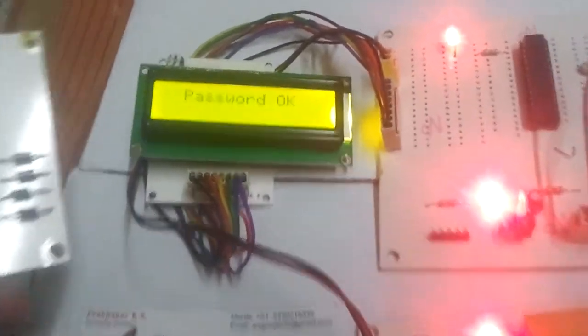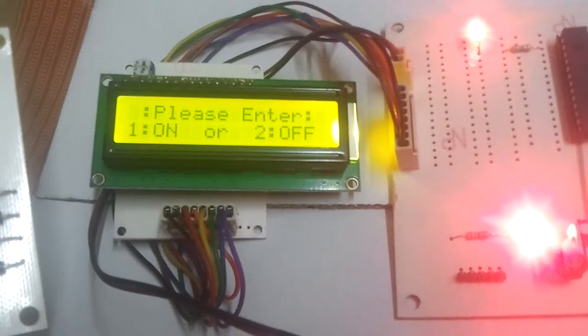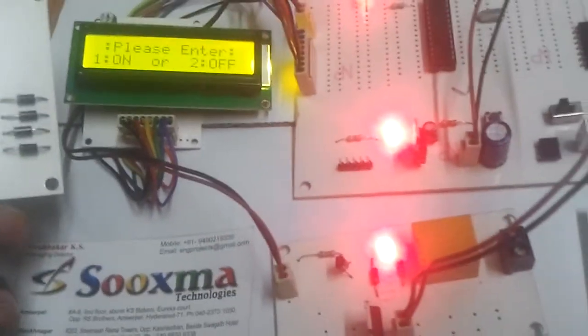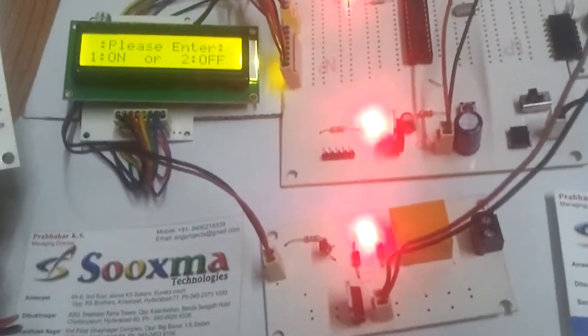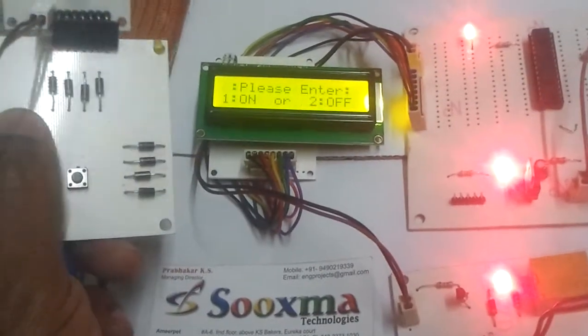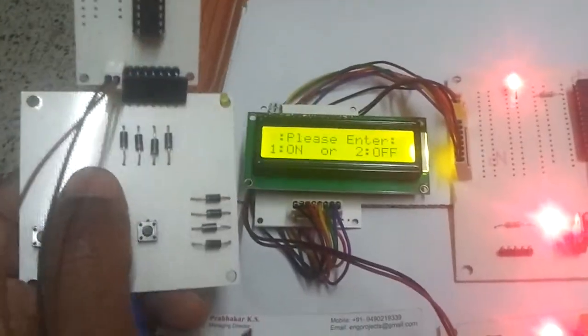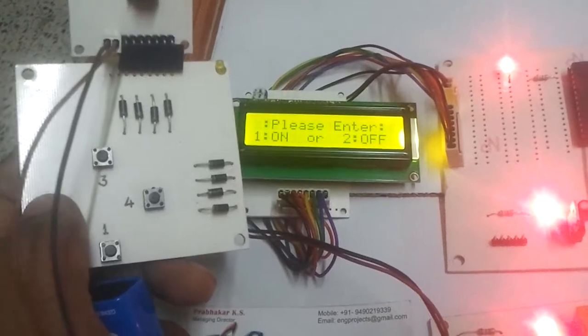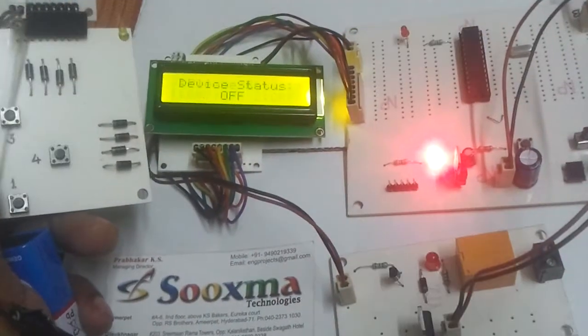Now again it says enter 1 for on or 2 for off. If I enter 4, nothing will happen. If I enter 3, nothing will happen. It can be powered off only by pressing 2. See, the relay got turned off.